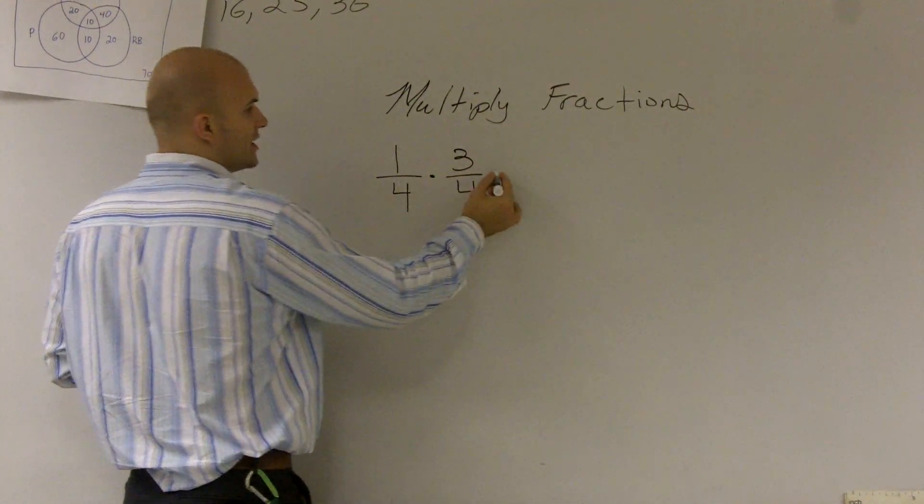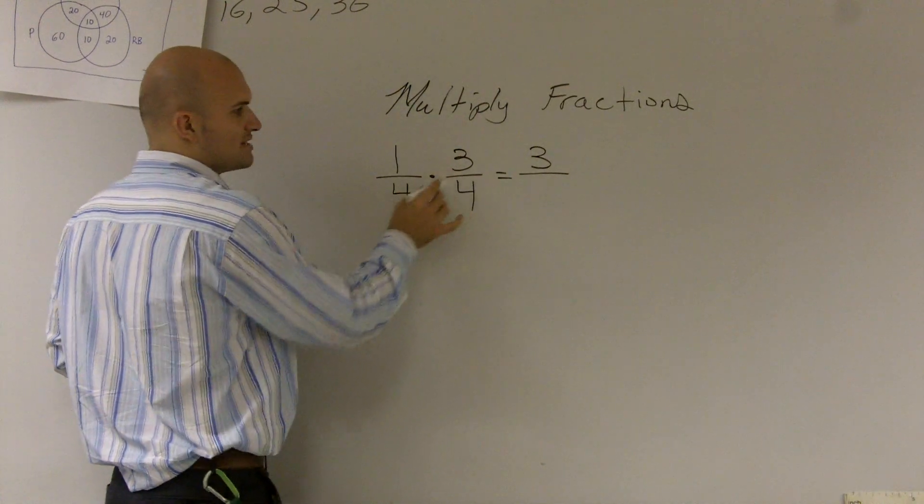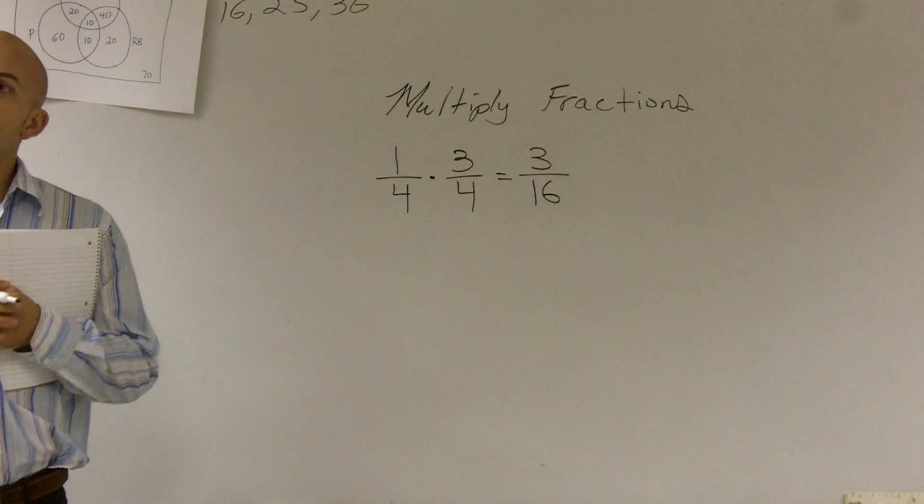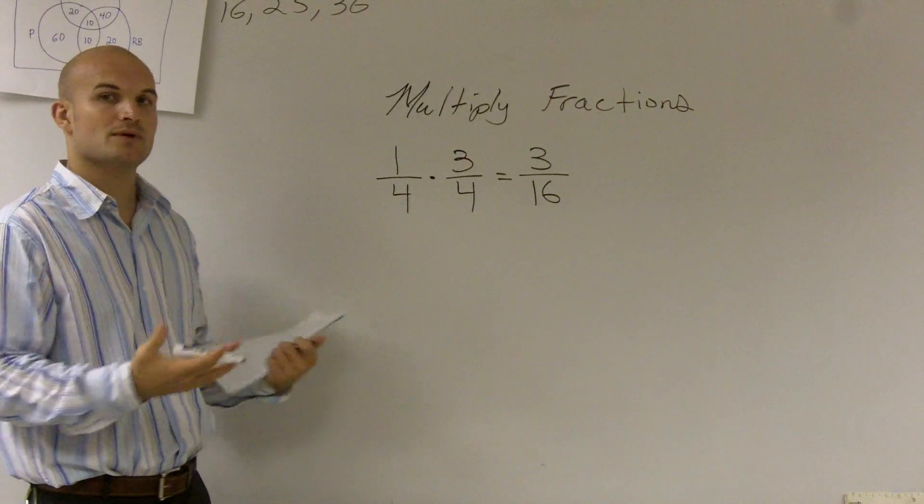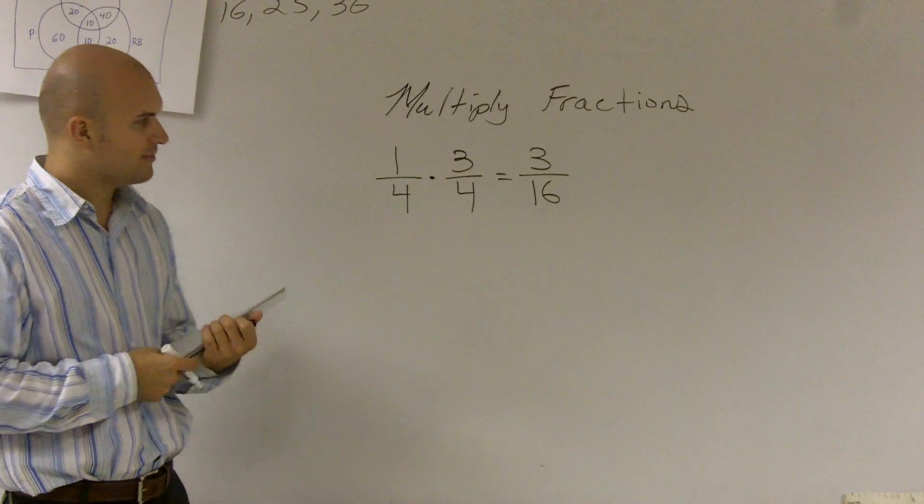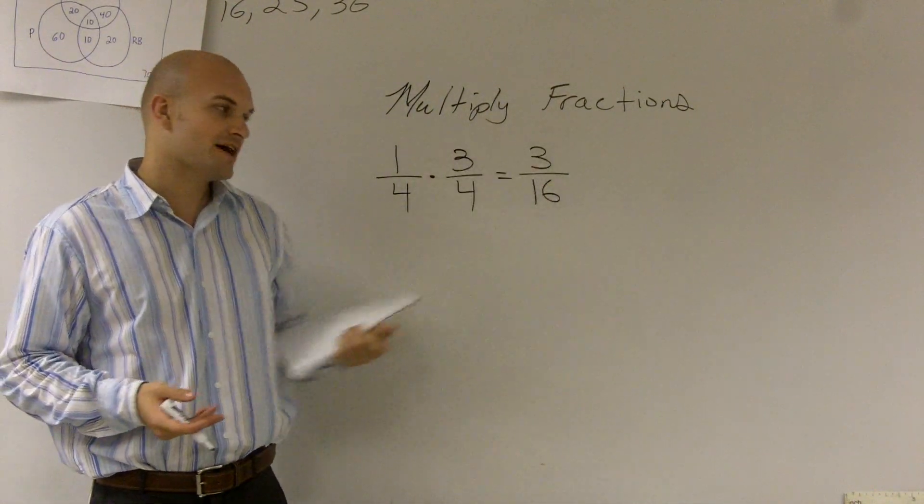So I can do 1 times 3, which is going to give me 3, and then over here I'll do 4 times 4, which is going to give me 16. Then remember, since we're always dealing with fractions, we always want to look if we can reduce the fraction any further. And over here, we cannot reduce this fraction any further.